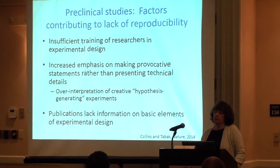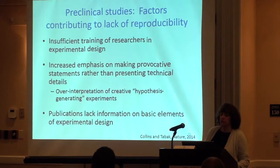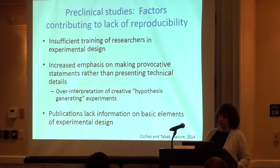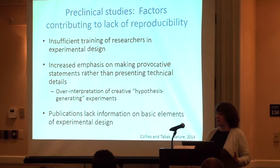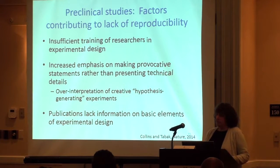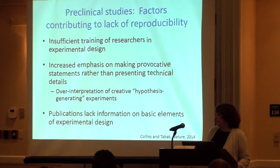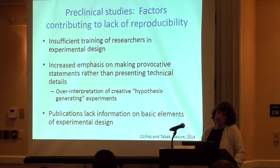What types of things can contribute to this lack of reproducibility? Leadership at NIH, including Francis Collins, proposed a series of contributing factors in a paper published in Nature in 2014. They identified insufficient training of researchers in experimental design for pre-clinical studies. Also, when trying to publish pre-clinical data, there's a real emphasis on having a cool idea and making provocative statements, perhaps not including all the technical details. There's also over-interpretation of hypothesis-generating studies — these were hypothesis-generating but have become overstated conclusions. Within publications, the key elements of how to do the study often aren't included.